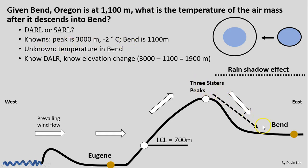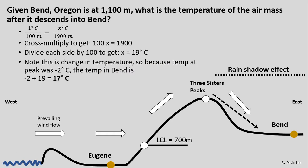Using the dry adiabatic lapse rate moving down the mountain: our knowns are the peak at 3,000 meters and negative 2°C, and Bend at 1,100 meters. The elevation change is 3,000 minus 1,100 = 1,900 meters decrease. We don't know our change in temperature, so cross-multiplying: 100x = 1,900, giving x = 19°C change. Because we are descending, this adds to our starting temperature: negative 2 plus 19 = 17°C when that air arrives in Bend.